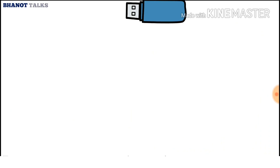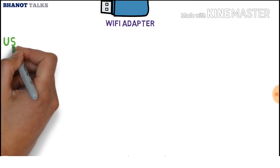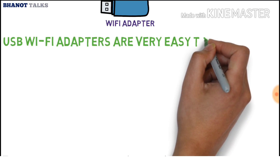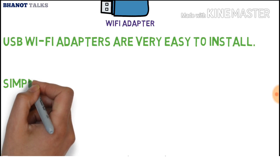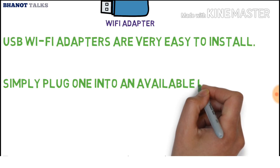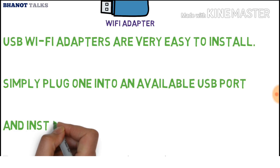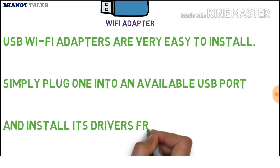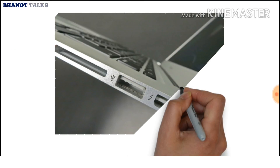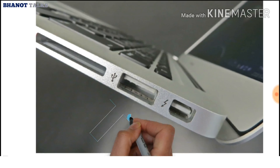The next question is: how do you install these Wi-Fi adapters? It is very simple — these USB Wi-Fi adapters can be installed to a PC or desktop by simply plugging the USB adapter into the available USB port of your PC and installing its software or drivers from the CD provided with it. In this diagram, where the arrow is marked, this is your USB port where you have to insert the USB Wi-Fi adapter, install the software, and you are ready to go.